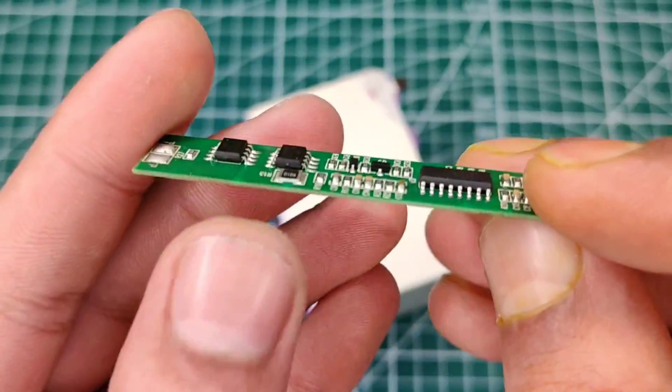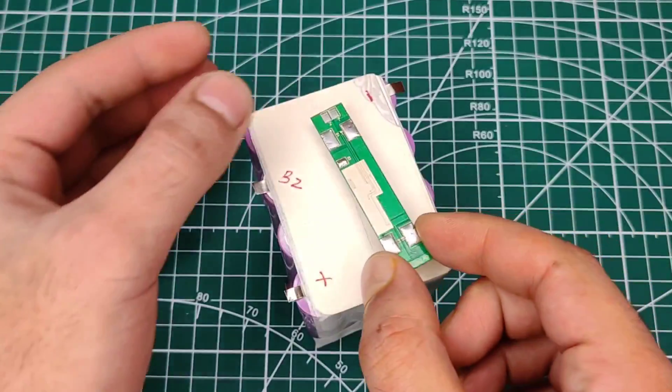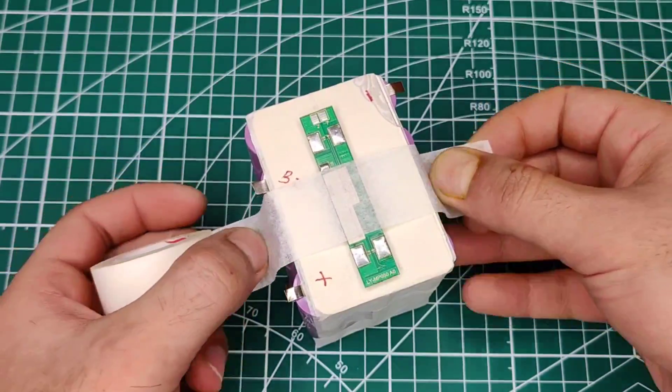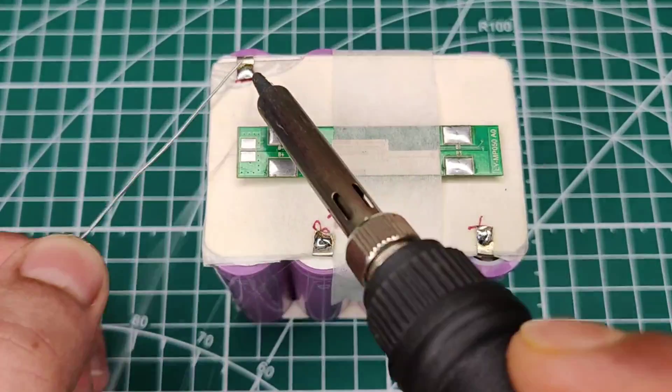Now all we need is this BMS board. I used 4S 20A BMS for 4 battery pack series. If you want to make 3 pack series, then you need to use 3S BMS board.